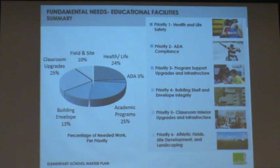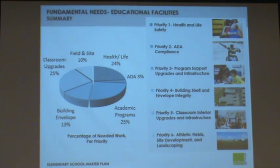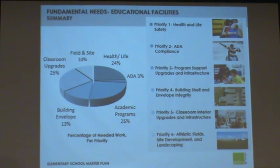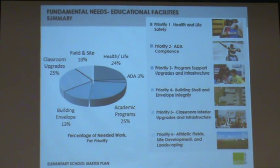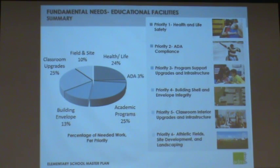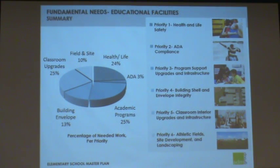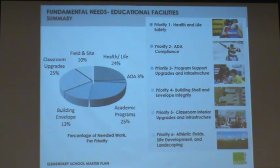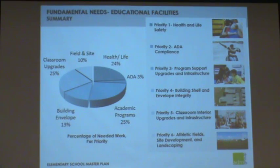The priorities are: priority one, health and life safety; priority two, ADA accessibility for handicapped students; priority three, program support upgrades in infrastructure — that's technology and what's important to support the learning environment; priority four, building shell and envelope integrity, meaning roofing; priority five, classroom interior upgrades and infrastructure — it's nice to have pretty carpet and paint, but probably not the highest priority; and number six, athletic fields, site development, and landscaping.